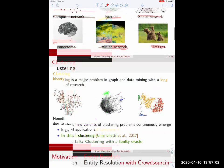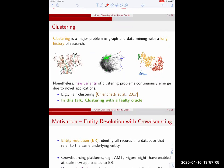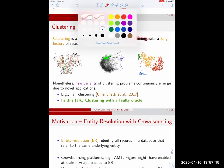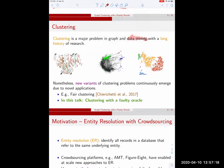We have all these graphs we want to analyze and among the problems that stand out for their importance is clustering, which is a major problem in graph mining and more broadly in data mining with a very long history of research. Despite this, clustering is a very active research area because new variants of clustering problems keep emerging. For instance in 2017 Flavio Cerichetti and others motivated by US Supreme Court orders introduced a notion of fair clustering. In this talk I'm going to talk about clustering with a faulty Oracle and I would like to start by motivating the problem.